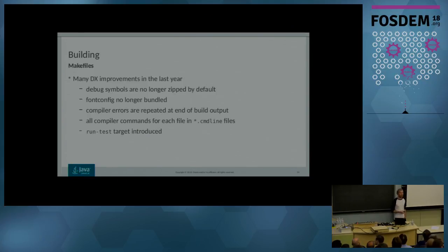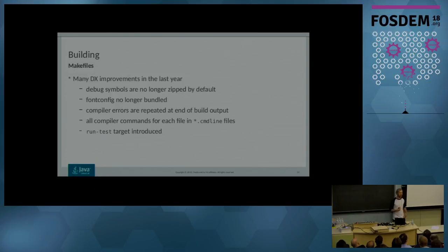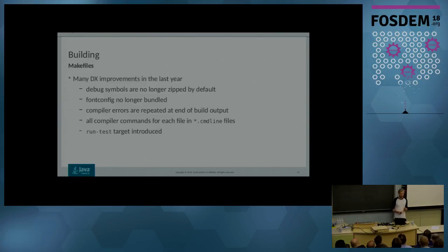There have been many developer experience improvements to the build system overall. Debug symbols are no longer stripped by default, so if you're working in Hotspot and it crashes, you can now more easily debug it. The fontconfig library is no longer bundled with OpenJDK, which is good news for packagers of different distributions. Compiler errors are repeated at the end of the build output — you no longer have to scroll through multiple pages of output to find that one compilation error. Also, all compiler commands are available in .commandline files for each source file, so you can find the exact command used to produce any .o file.